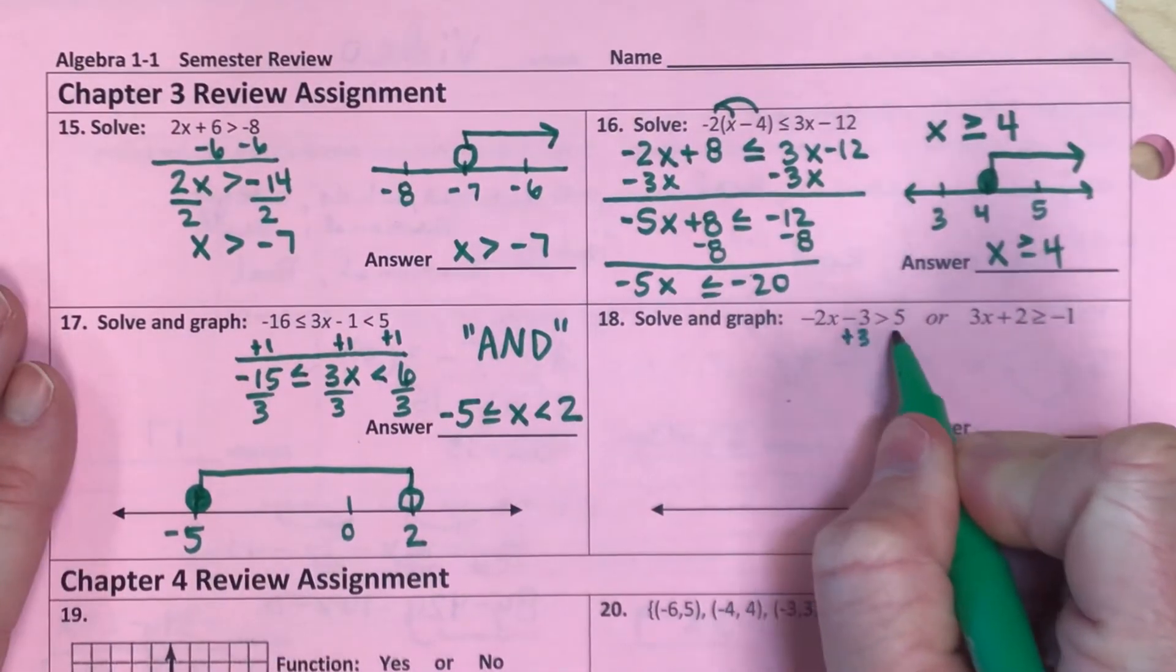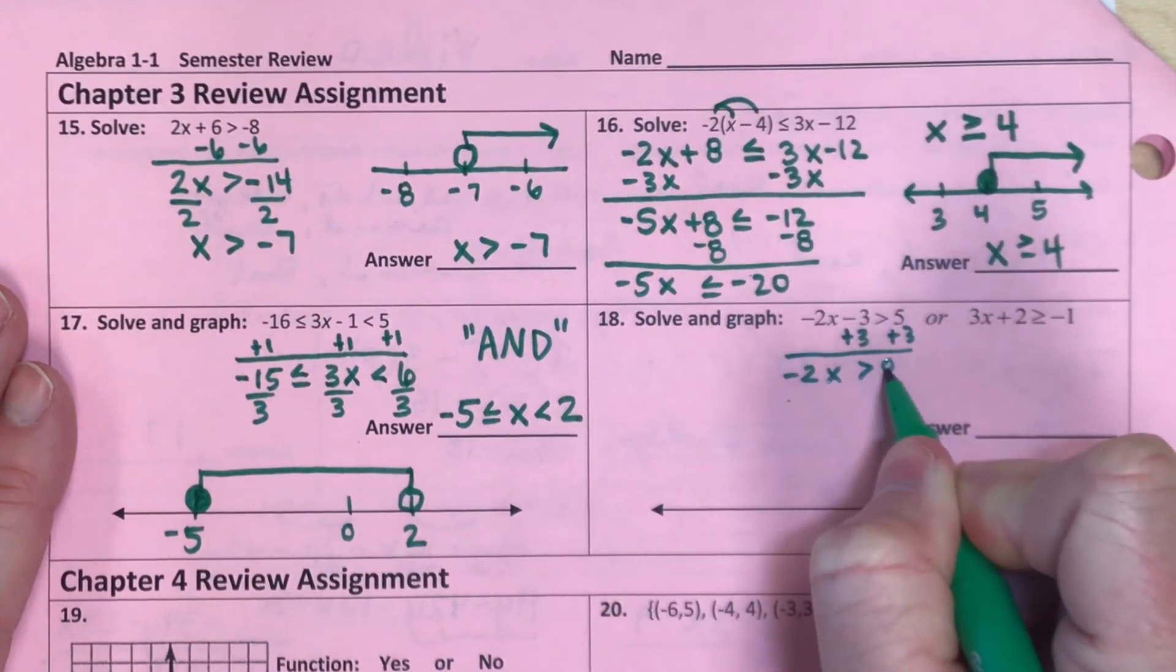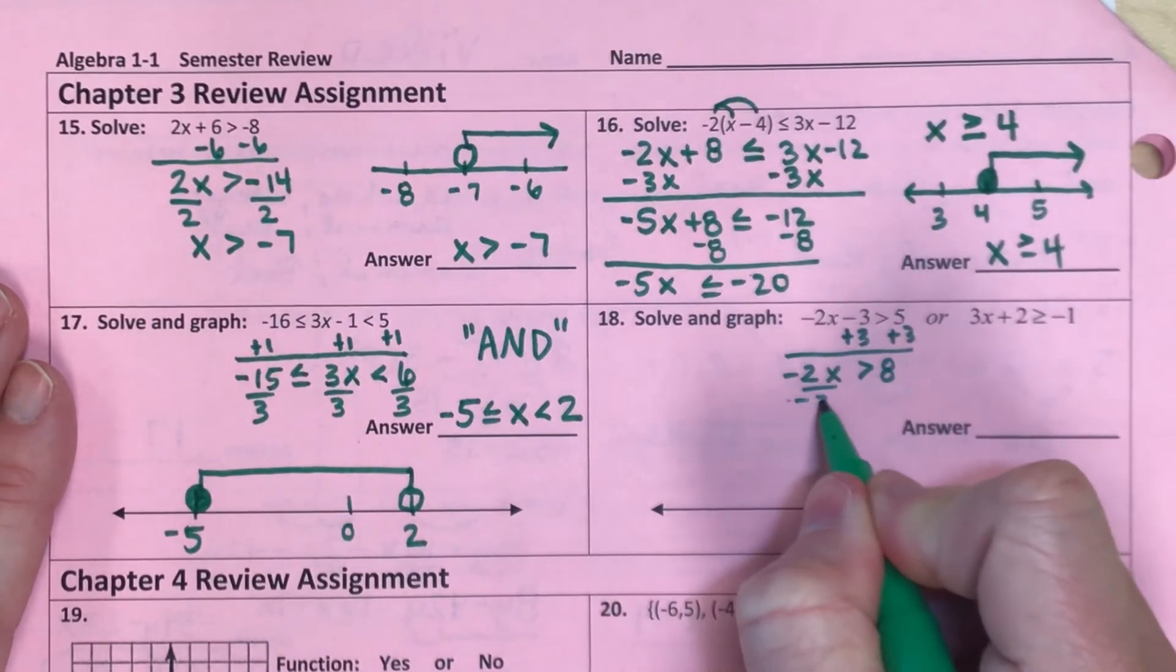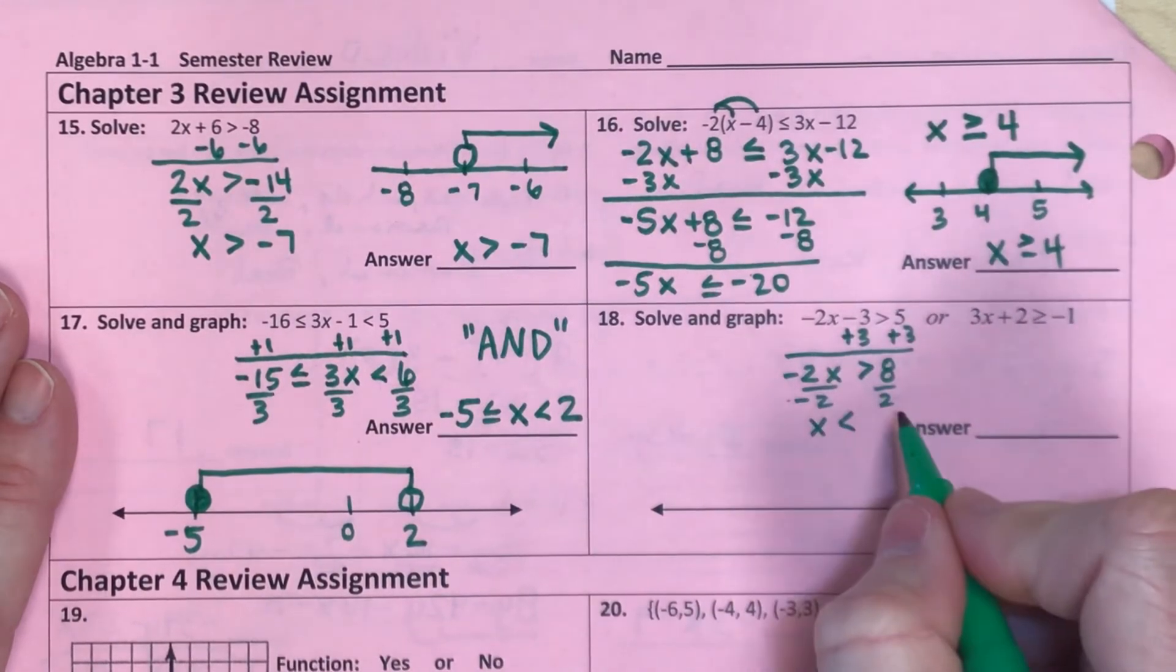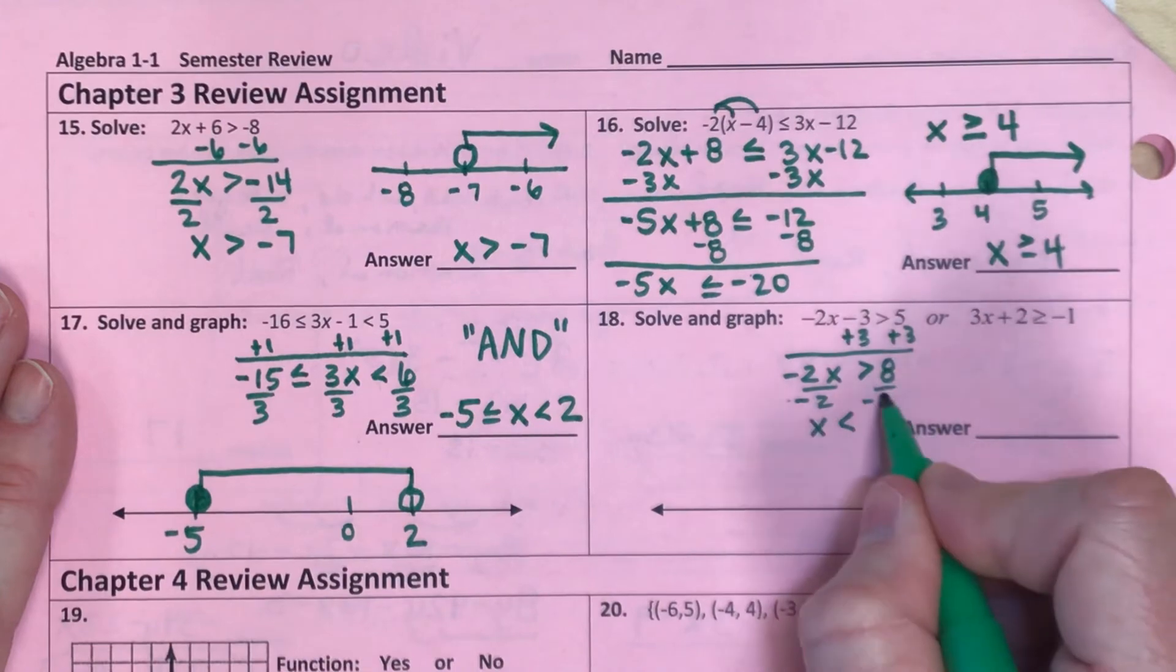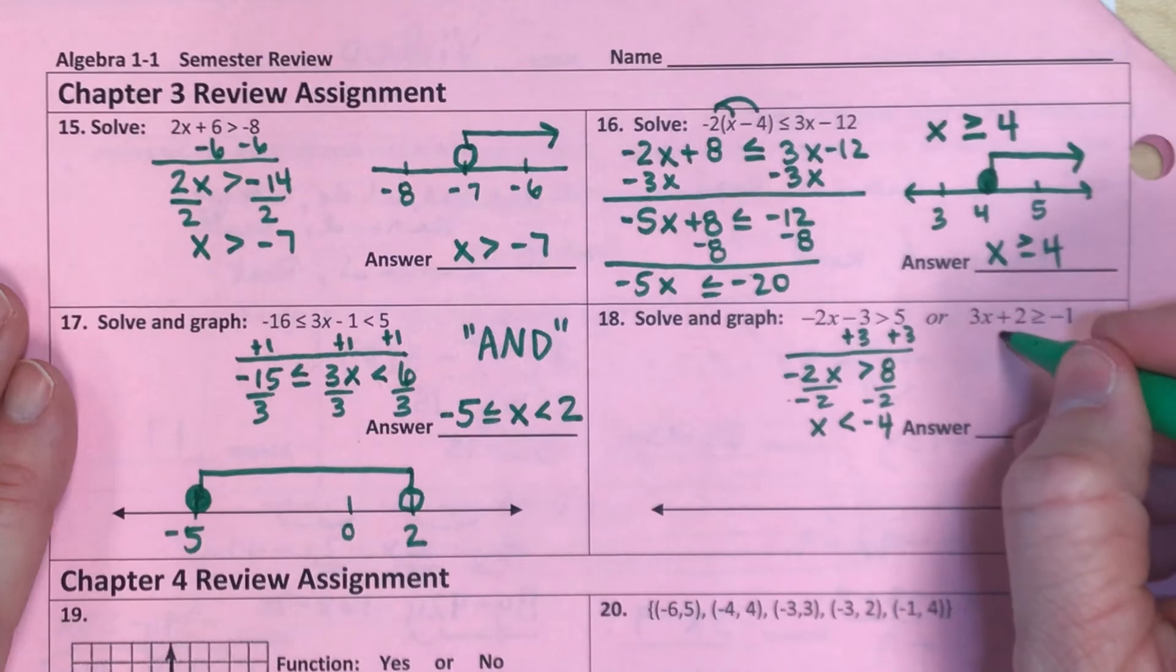So I'm going to add 3 here to start. And I have negative 2x greater than 8. Now, if I divide by a negative 2, I have x is now going to flip my sign less than, divide by negative 2, negative 4. So that's going to be one of my inequalities.